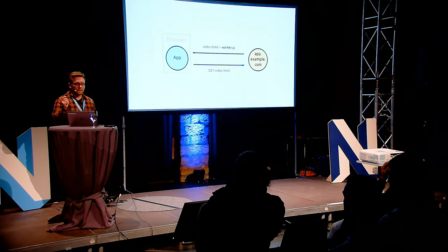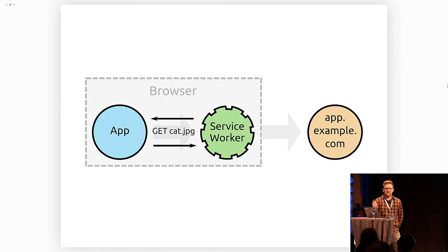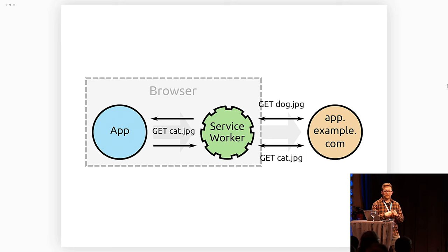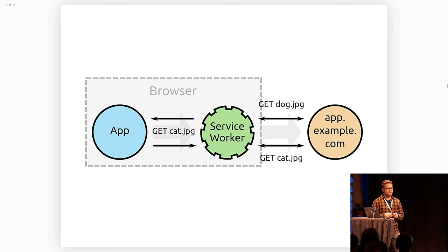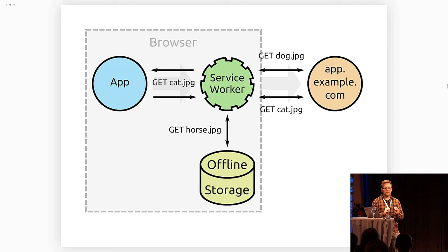The web app can at all times submit a request — get me this cat picture — and the service worker decides how this request is handled. We could just forward it to the server, or we could have some fun: cat pictures, not on my watch — you get a dog instead. But the more reasonable approach is to serve images or any other resource from an offline data store, where you don't even have to leave your browser. This is how the offline support works.